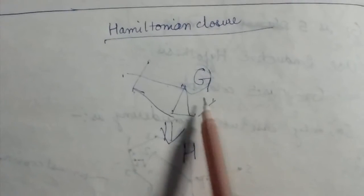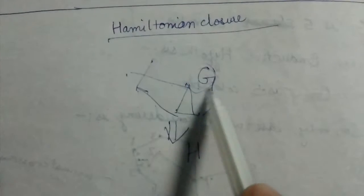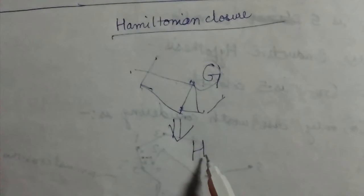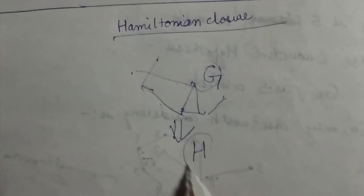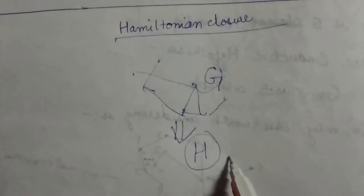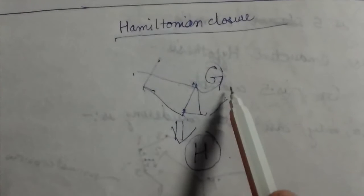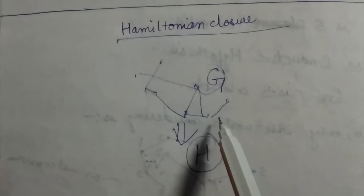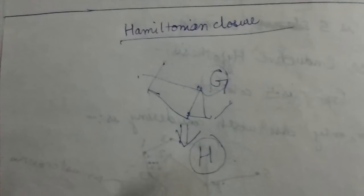Today we will learn about the Hamiltonian closure of a graph. So let this be a graph G and we want to calculate its Hamiltonian closure H. Then we add some edges between the vertices of G as follows.